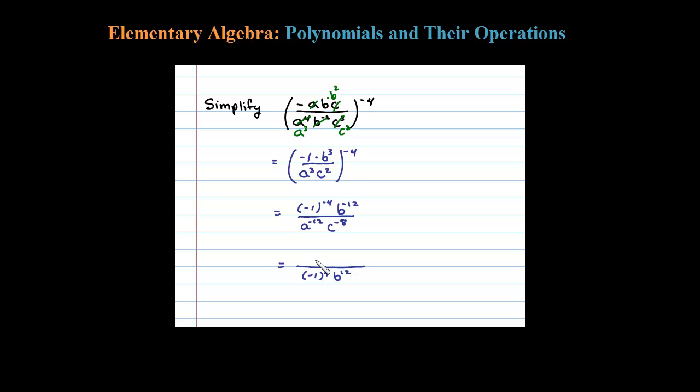Now a to the negative 12th in the denominator comes to the numerator as a to the positive 12th and times c to the positive 8th. And then for the last step, all we do is just clean this up.